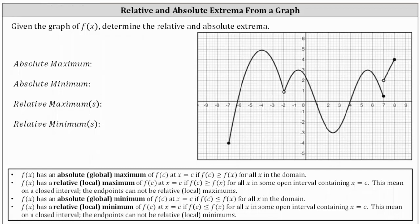Given the graph of f of x, determine the relative and absolute extrema. Let's begin by reviewing the definitions of absolute maximum and absolute minimum. f of x has an absolute or global maximum of f of c at x equals c if f of c is greater than or equal to f of x for all x in the domain, which means we can identify the absolute maximum by identifying the highest point of all the points on the graph.